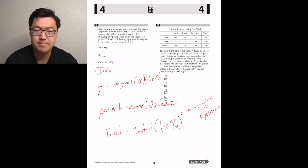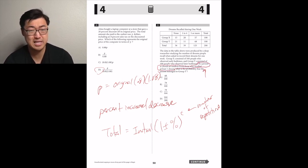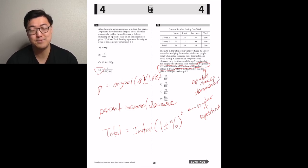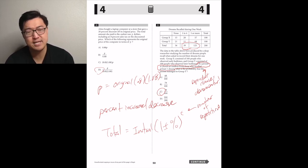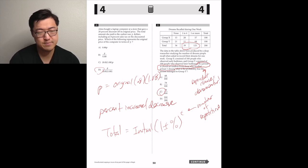Number 21, the data in the table above were produced by a sleep researcher studying the number of dreams people recall when asked to record their dreams for one week. Group X consisted of 100 people who observed early bedtimes and group Y consisted of 100 people who observed later bedtimes. If a person is chosen at random from those who recalled at least one dream, one thing that I've noticed is that the dependent clause will typically represent the denominator. So a person chosen at random from those who recalled at least one dream, I think that's going to be my denominator. And then the second part of the sentence is going to be my numerator. So let's see how many people recalled at least one dream. I guess we're getting rid of the none column. I think we're going to keep the one to four and the five or more. So we want to add up those totals of 39 plus 125. That'll give us 164. So we need an answer with 164 on the bottom, assuming they didn't reduce it. So C.